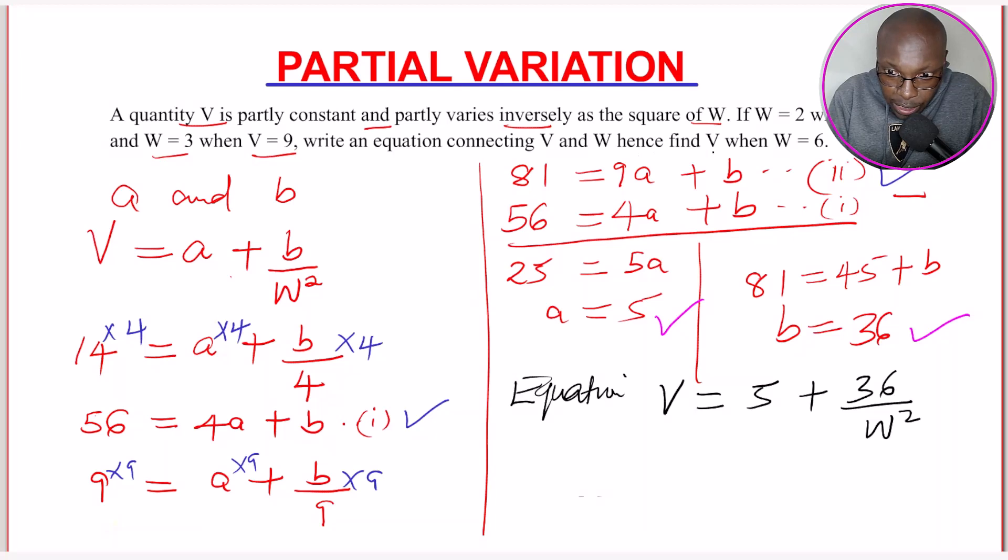Now the question is, find V when W is 6. So when W is 6, what would be V? So you just get V = 5 + 36. Then W is 6, so 6 squared.